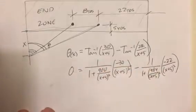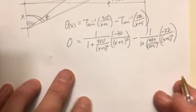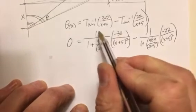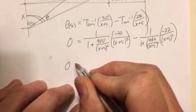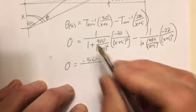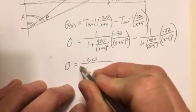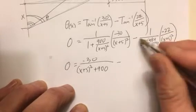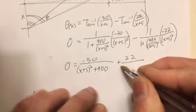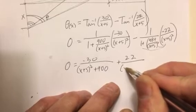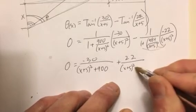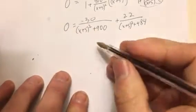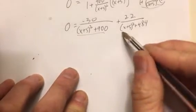We want to set this equal to zero. Going through the algebra carefully, the easiest thing to do is to multiply the numerators and denominators. We get zero equals negative 30 over x plus 5 squared — and when that distributes in, it cancels — plus 900, minus, and then we get plus 22 over x plus 5 squared — cancels again — plus 484. Moving the second term over, we then expand both sides.